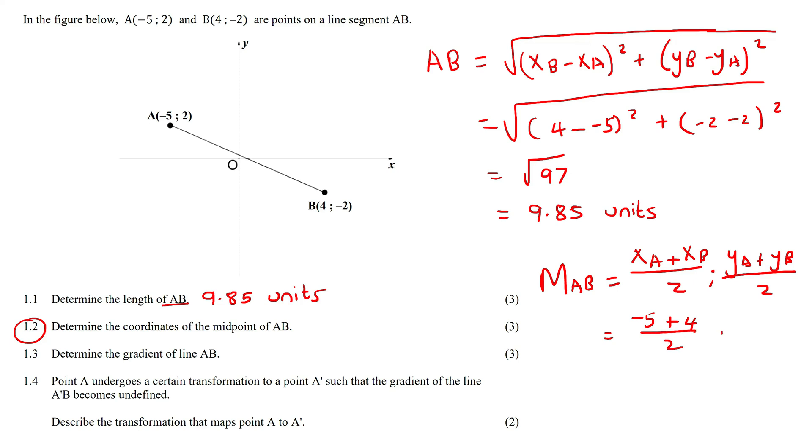We take the y value of point A plus the y value of point B divided by 2. You can work this out on your calculator - you should eventually end up with negative a half, and then this one you actually just end up with zero. So the coordinates would be negative a half and zero.